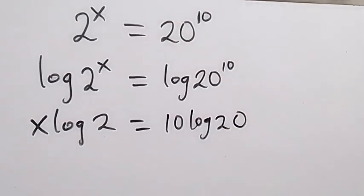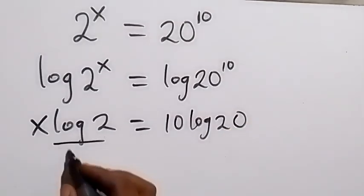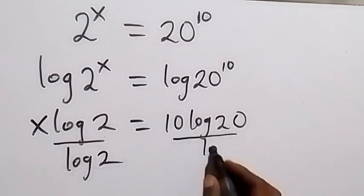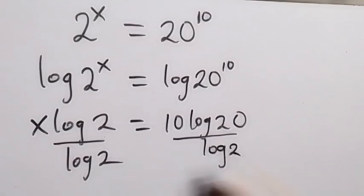And in the next step we can divide both sides by log 2. So we divide this side by log 2 and also we divide this side by log 2. And then from here, log 2 we cancel each other...